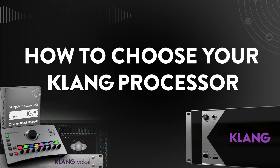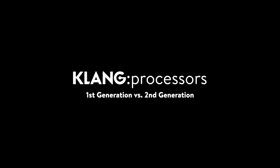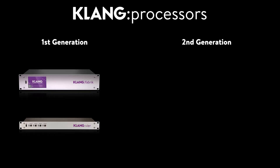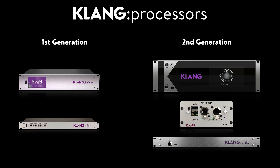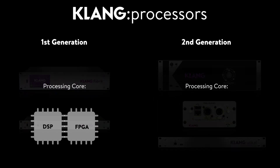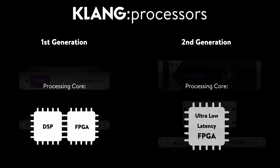We start with a general overview. There are two generations of Clang processors: Clang Fabrik and Clang 4 from the first generation, and Clang Conductor, DMI Clang and Clang Vocal in the second generation. While the first generation was driven by a combination of DSP and FPGA, we have completely rewritten the processing core to fit everything onto our new and immensely powerful ultra-low latency FPGA. This cuts the latency down to an astonishing quarter millisecond, which is less than a tenth of the first generation.